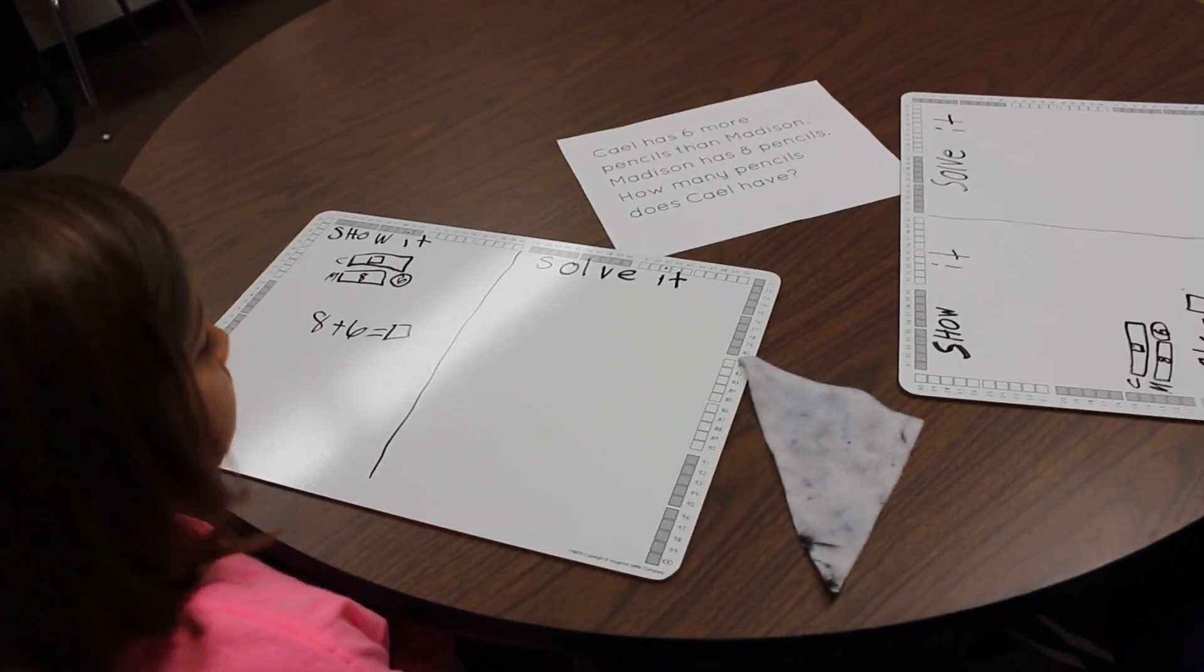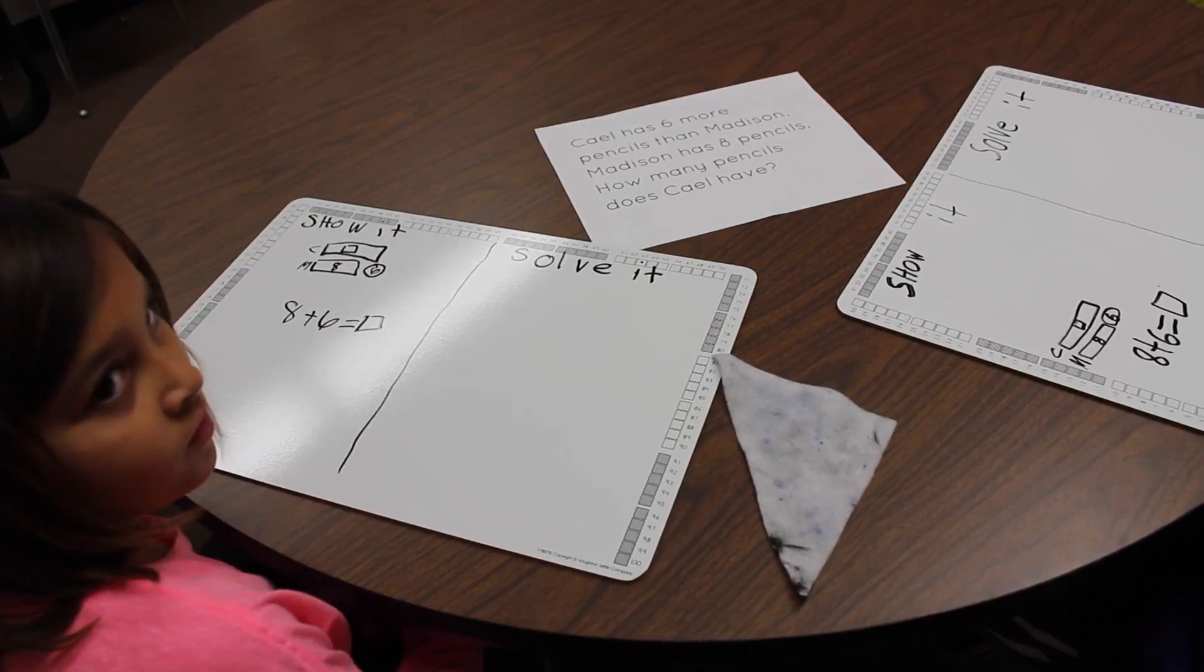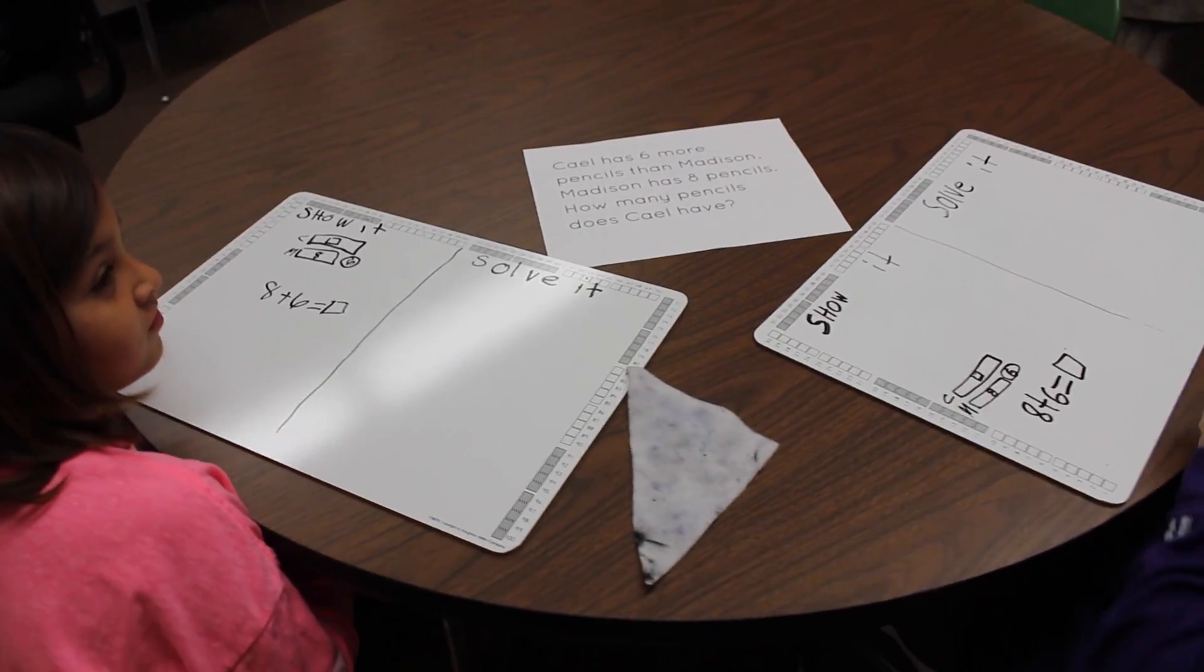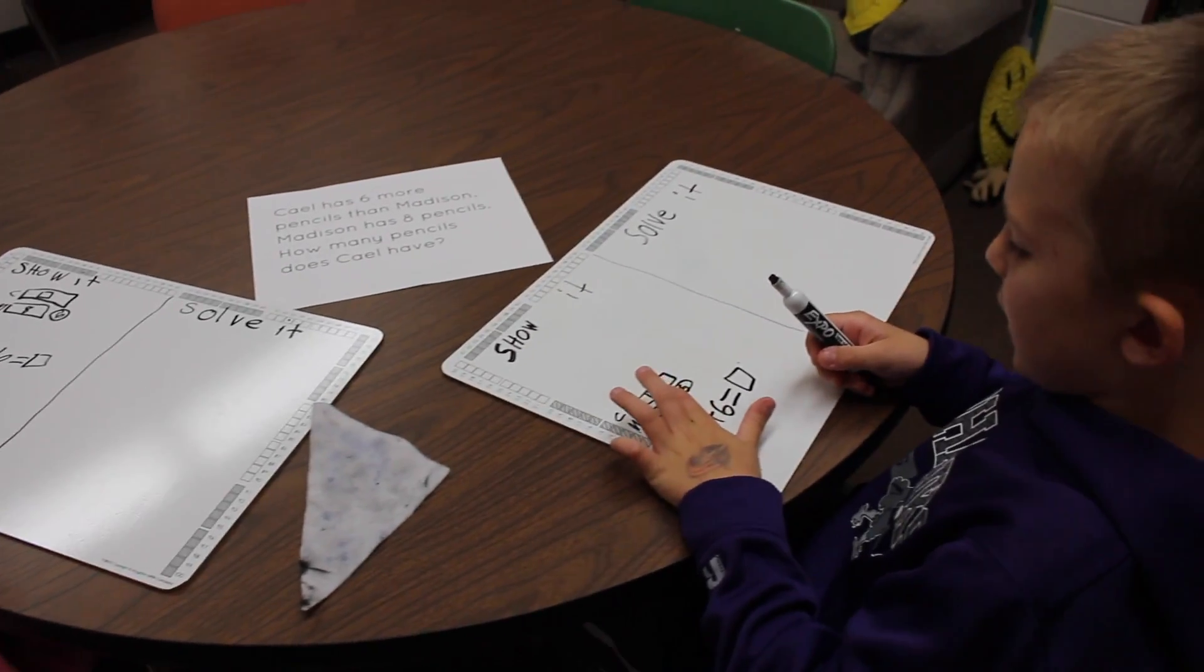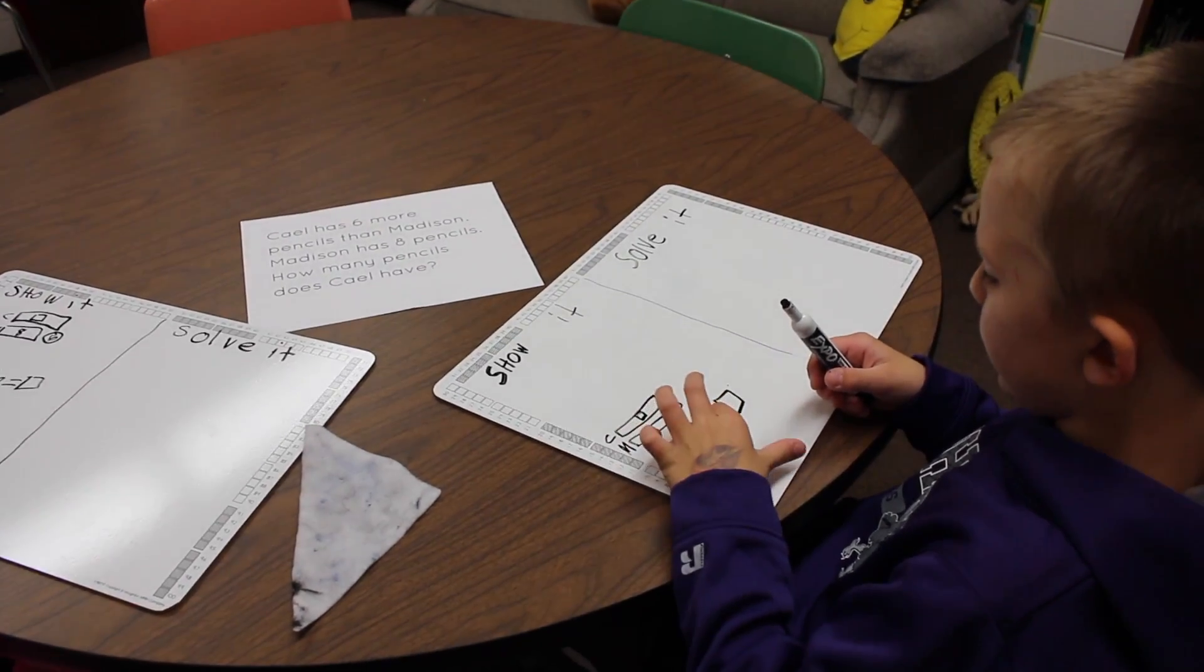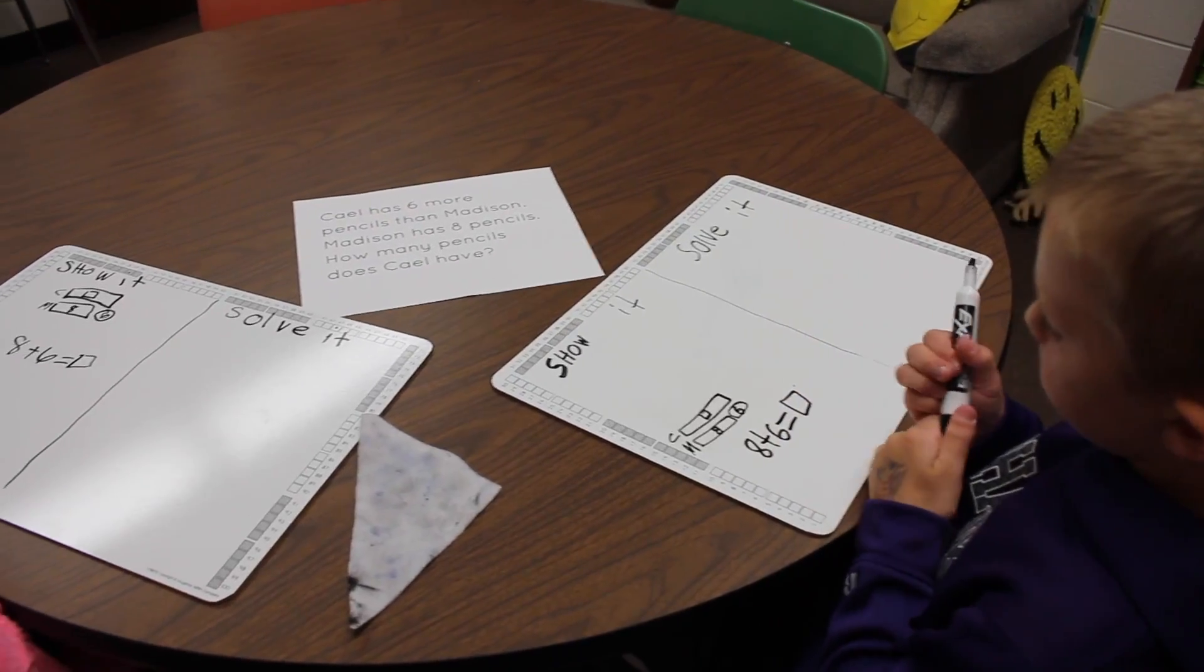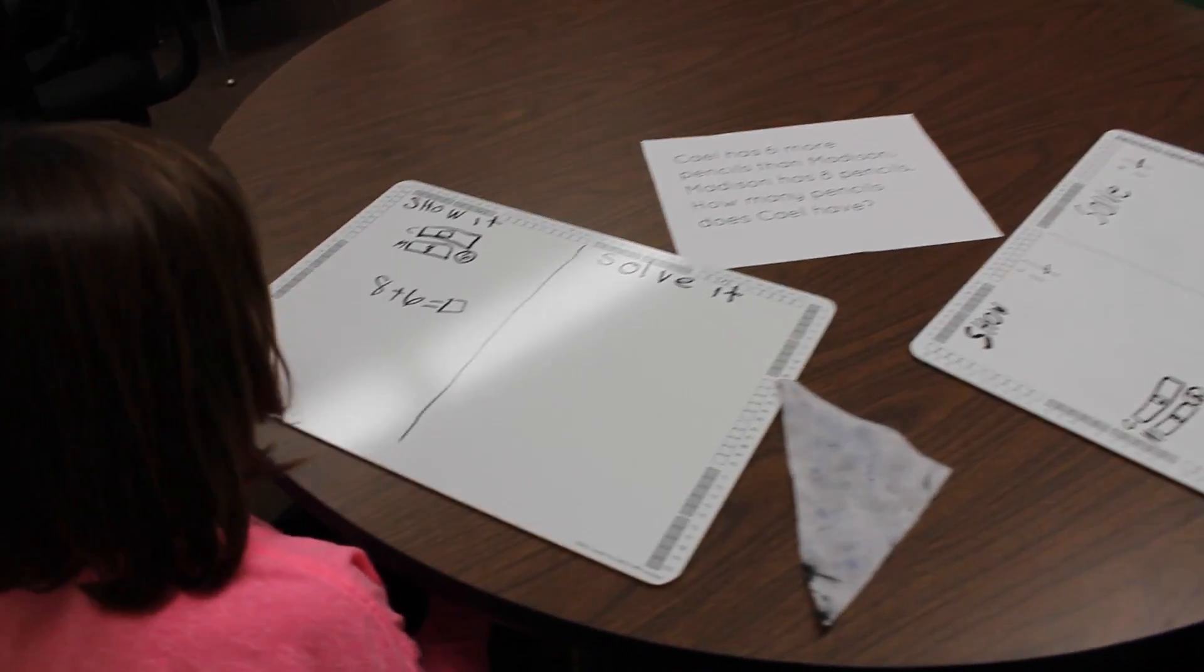Okay, so you two both wrote eight plus six equals unknown. Can someone explain why you wrote that equation? Because Madison has an eight and we can put the eight down here and the six is right here. We can put that right there and we can put the square right there. And what happens if you add the eight and the six together? What will it be equal to, Madison?